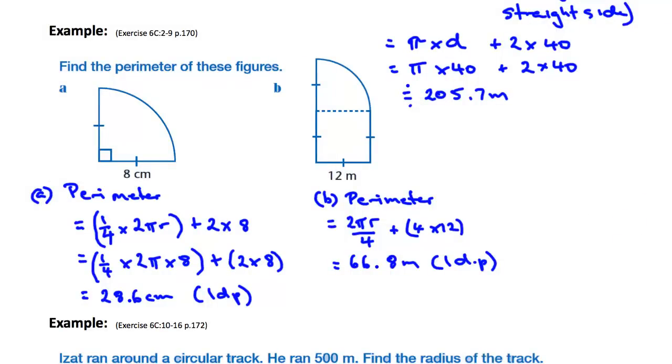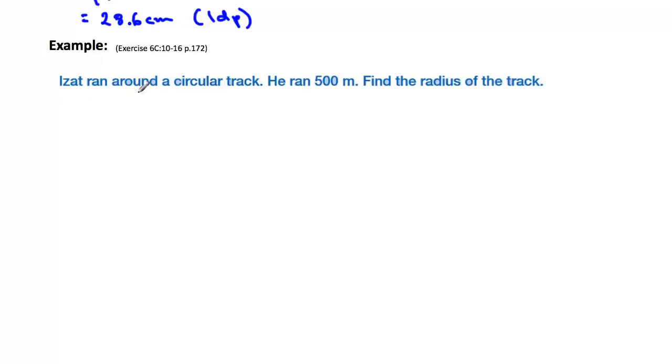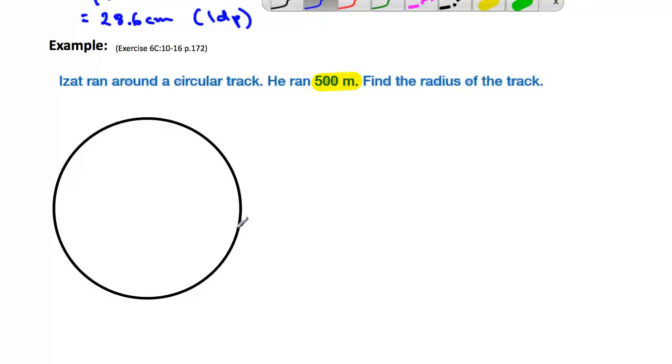And the final one is one where there's no diagram given. I'm going to push this up the screen a little bit here. And then down a bit. There we go. And we've got Izat, who ran around a circular track. So let's draw a circular track. I'll get a shape. Here we go. There's our circle. So let's draw a circle shape over here. And I'll bring that down into our area. There we go. There's our circular track. Now he ran, it says he ran 500 meters around that track. So it's a 500 meter track. Find the radius of the track.